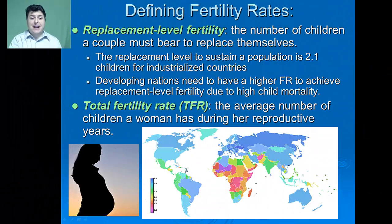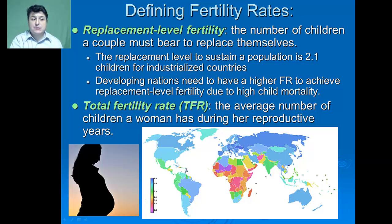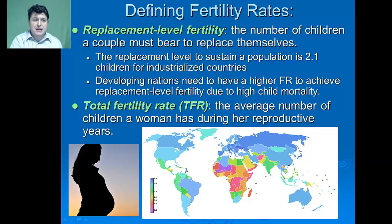Another factor used in population studies is fertility rates. There are two types. The first is replacement level fertility — the number of children a couple must bear to replace themselves. The replacement level to sustain a population in an industrialized country is about 2.1 children.